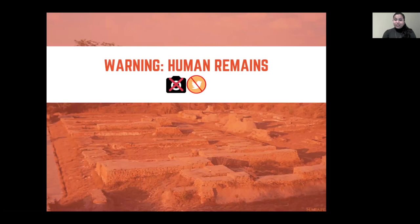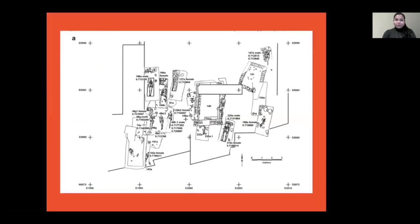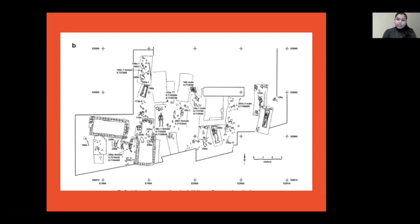The next few slides contain drawings and images of human remains, so just a warning for that. If you see a slide with the camera crossed out and the Twitter logo crossed out, please do not take photos and please do not share them on social media. This is a plan of the Harappa Cemetery. As you can see, there are numerous individuals in the cemetery, and the burials differ in terms of orientation and the number of burial goods. What's clear is that this is a dedicated space for burials, separate from where individuals were living.